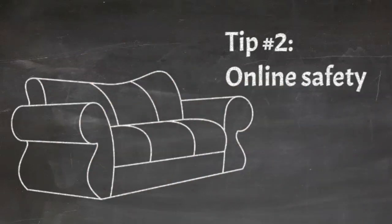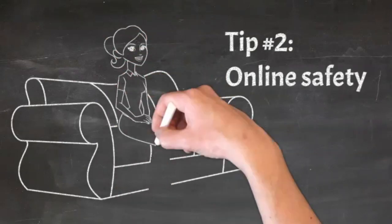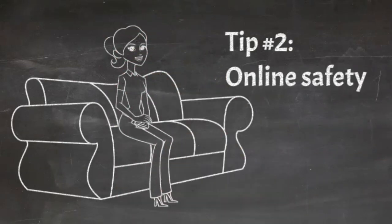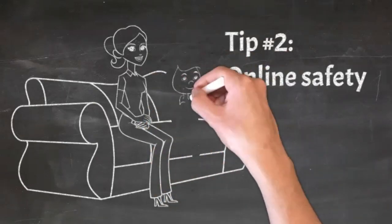Set rules for internet use that everyone agrees with. Make sure your children know that they should never give out personal information online, such as their address or phone number. They should also be careful about what photos they post online and what they click on in emails and websites.